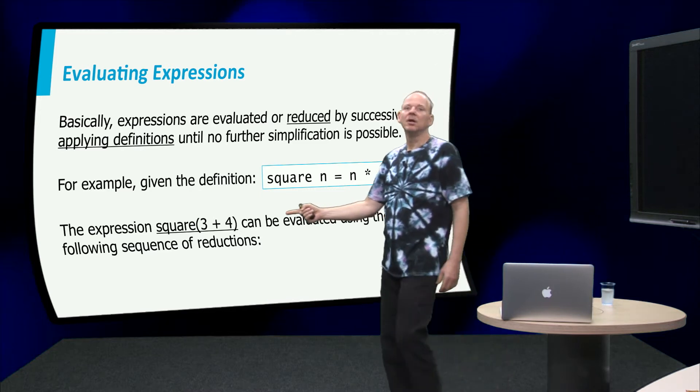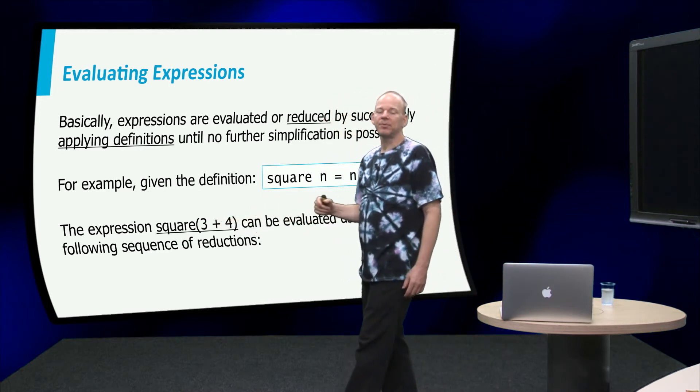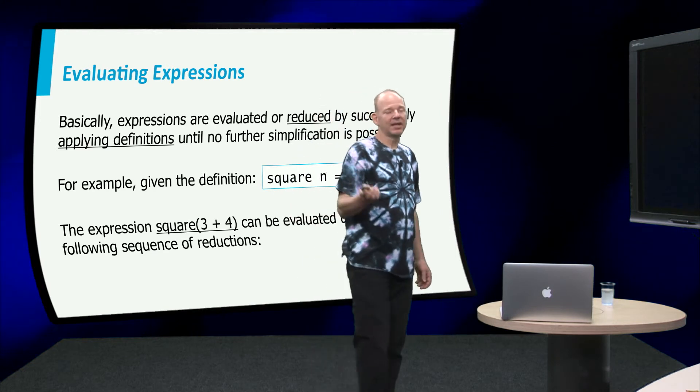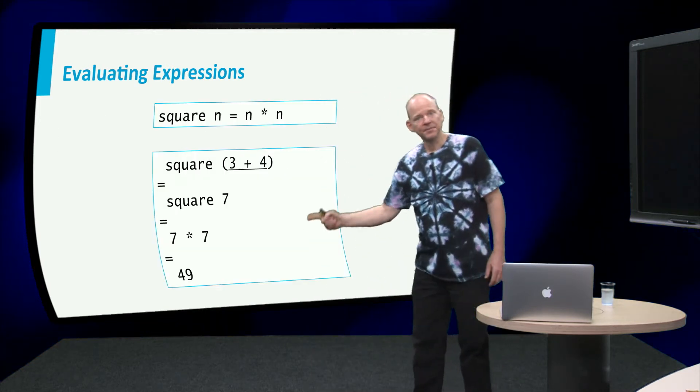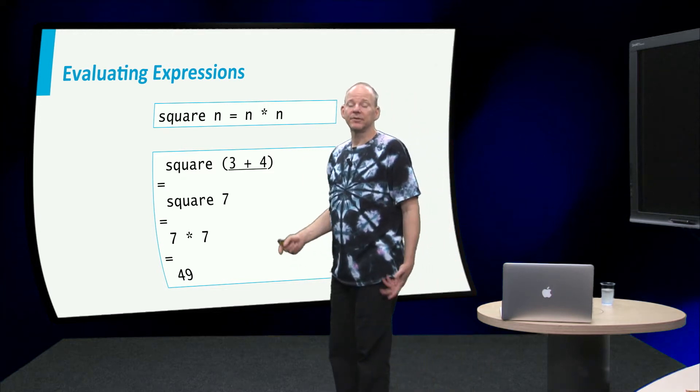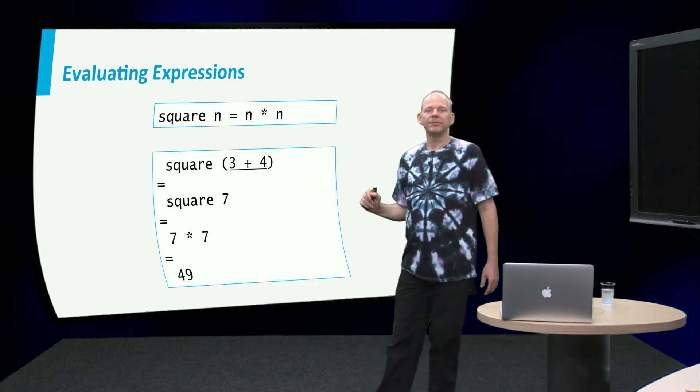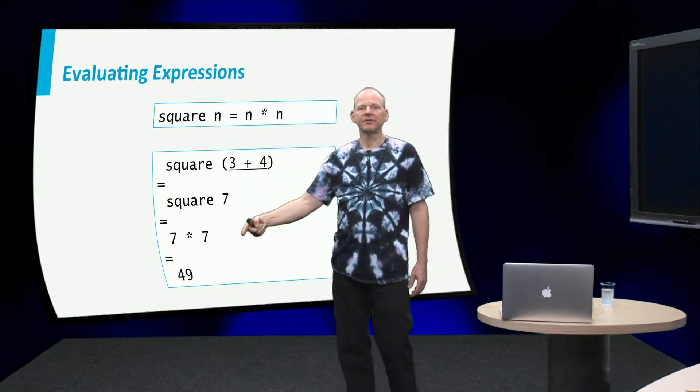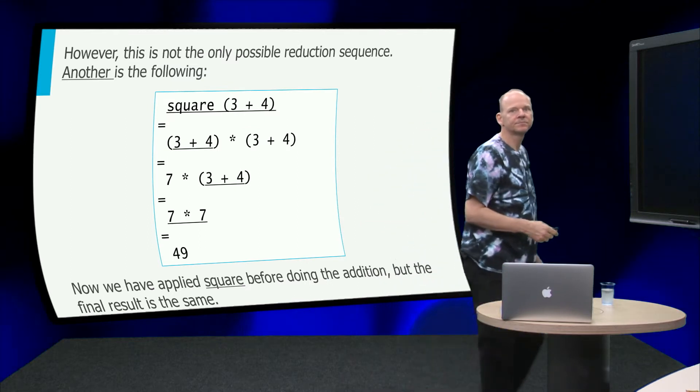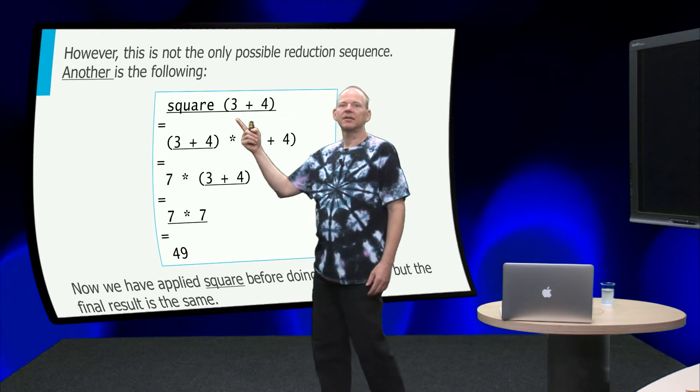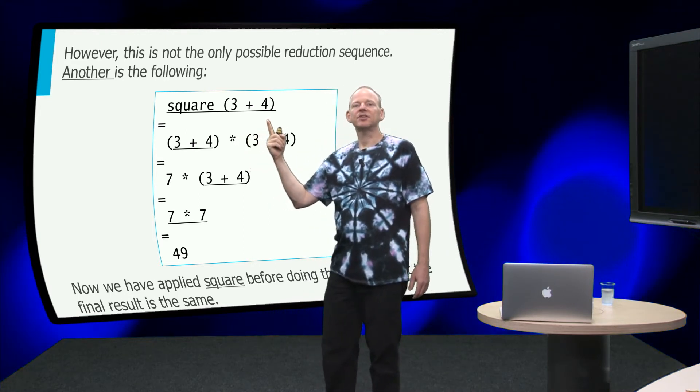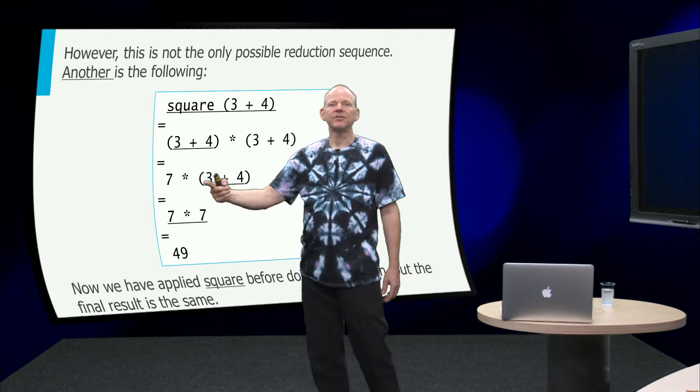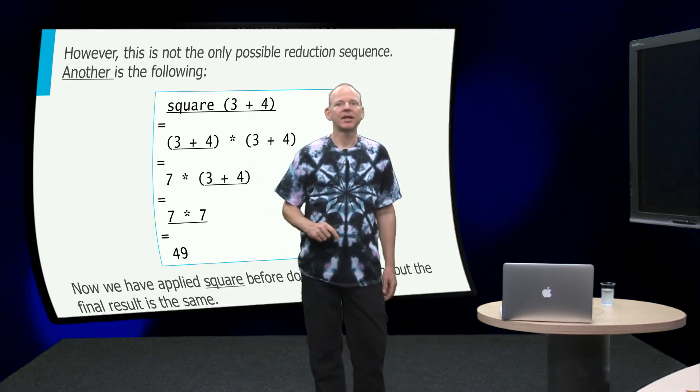But in that case you might think, oh, but now we have evaluated 3 plus 4 twice. And as we will see, Haskell has some smart ways to avoid duplicating that computation. So let's look at the first sample, the first strategy. So we first evaluate 3 plus 4 to give it 7, then we substitute the definition of square, so n equals 7, so we get 7 times 7, and we get 49. Now let's do it the other way around. We take this expression, we instantiate n with 3 plus 4, so we get 3 plus 4 times 3 plus 4. Now we execute this guy to 7, we execute that guy to 7, and we get 49.